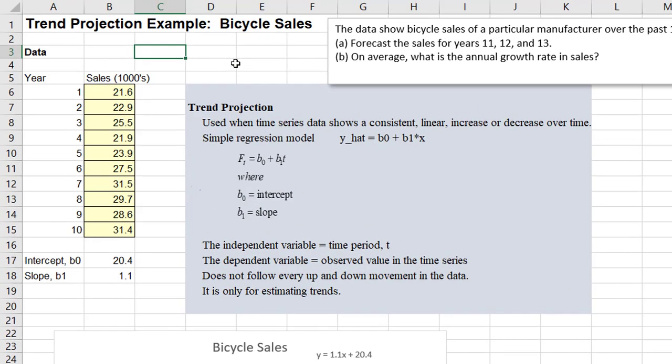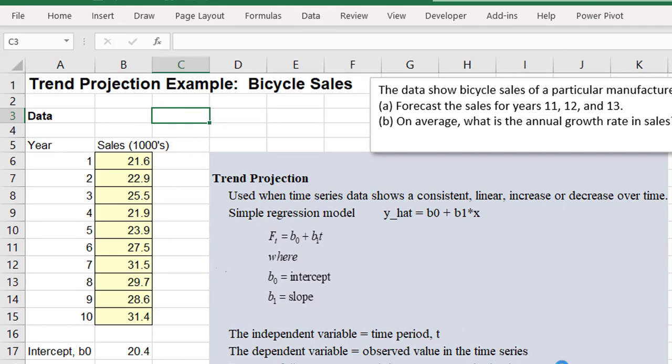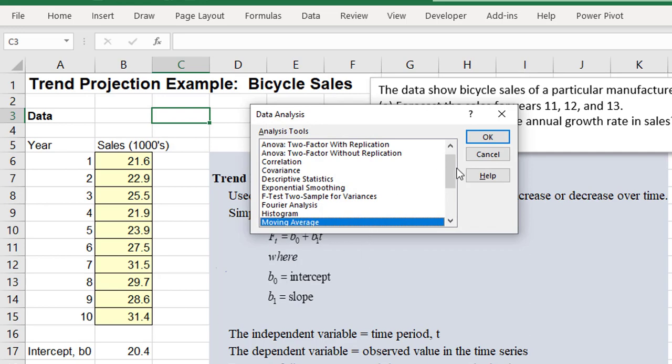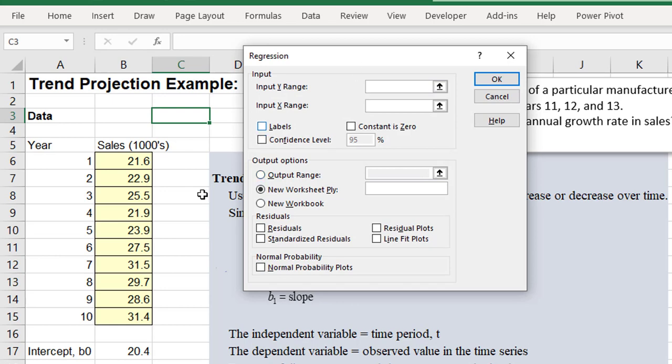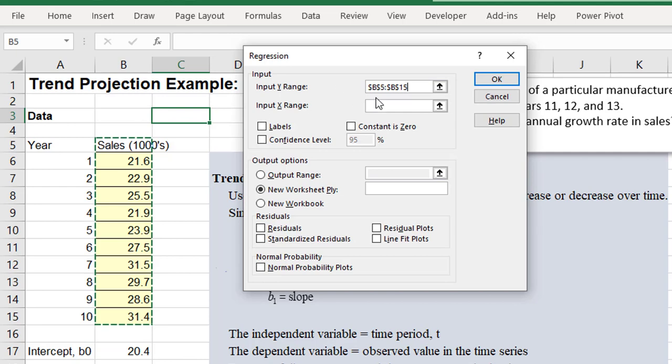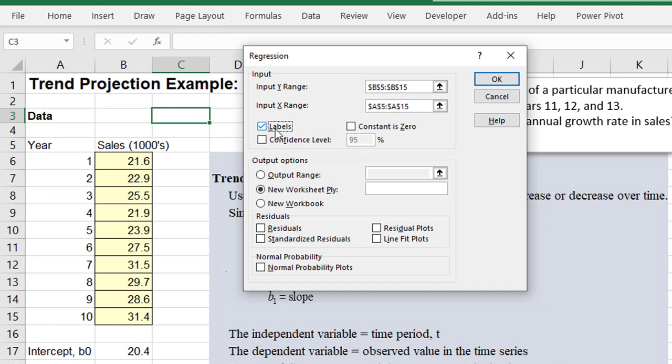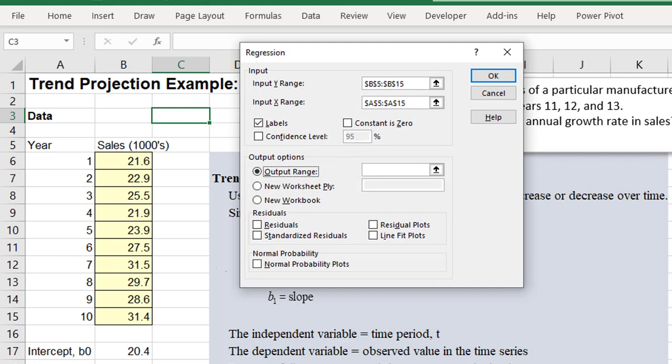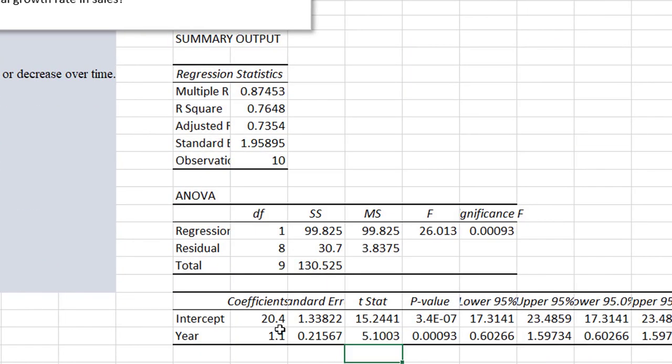A review of the third way. Go to data, data analysis. Find regression, y range, that's the sales, include the labels. And the x range, that's the years, and check labels, and maybe put it somewhere over here. I'll put range here and then say okay, and we could see again we get the same values.